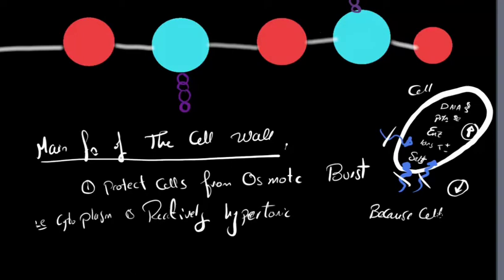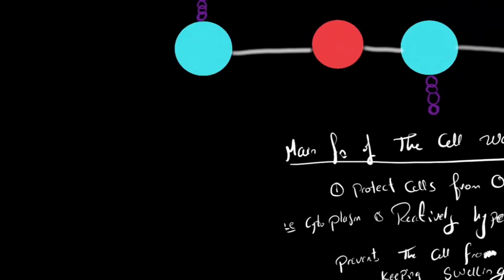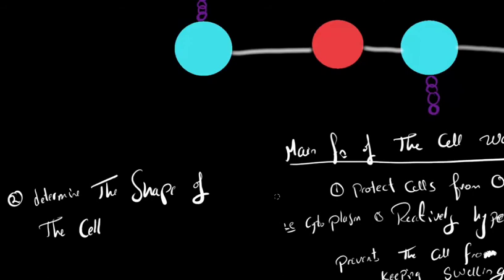The cytoplasm of the cell is relatively hypertonic. The bacterial cell wall acts as a steel network that allows nutrients and water in and out of the cell but prevents the cell from bursting due to osmotic pressure.